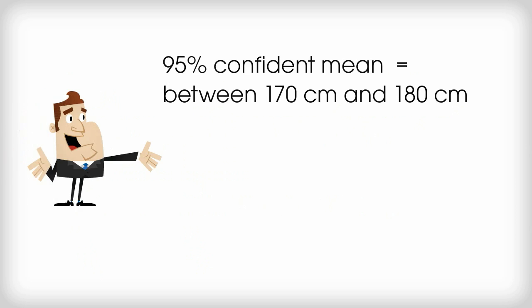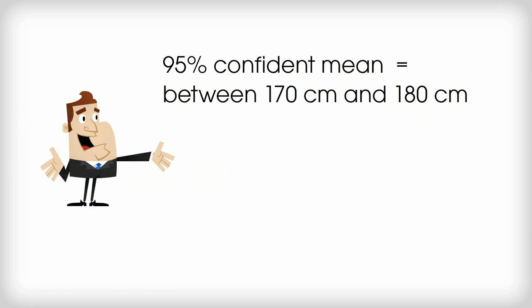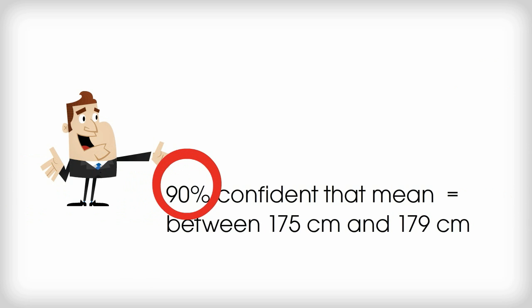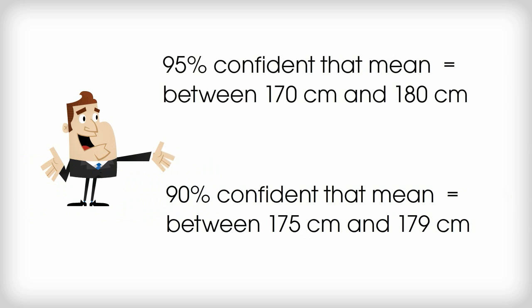But supposing the statistician says that there's a 90% certainty that the mean height of the male population in the UK is between 175 and 179 cm. You can see straight away the confidence interval is narrower here. It might be thought this is very helpful, that we're closer to judging what the population mean is. However, the percentage degree of certainty has fallen from 95% to 90%, so we might need to be a little more cautious.